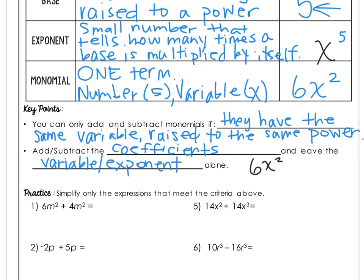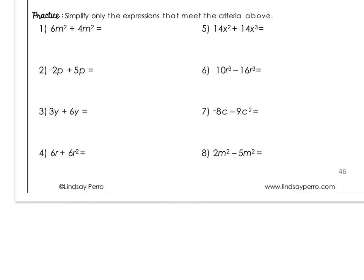Here's where your highlighters will come in handy — highlight each individual term. In our first example, 6m squared plus 4m squared: do they have the same variable raised to the same power? This is m raised to the second power and m raised to the second power — yes, they meet the criteria. Think of m squared as literally a square with a side of m and a side of m. So 6m squared plus 4m squared: 6 and 4 together gives me 10m squared.